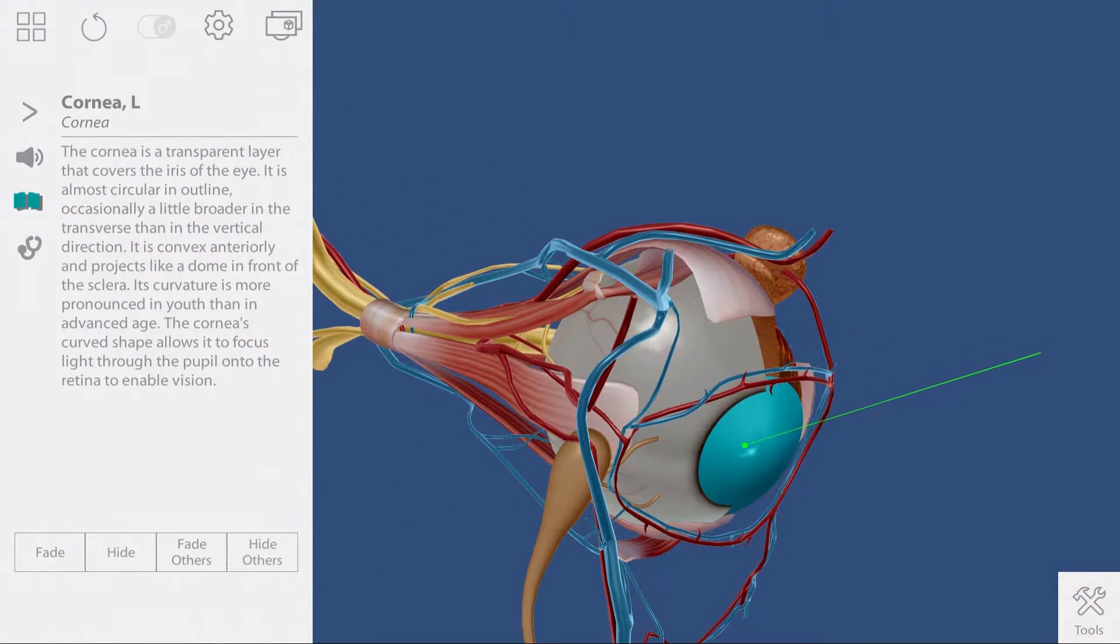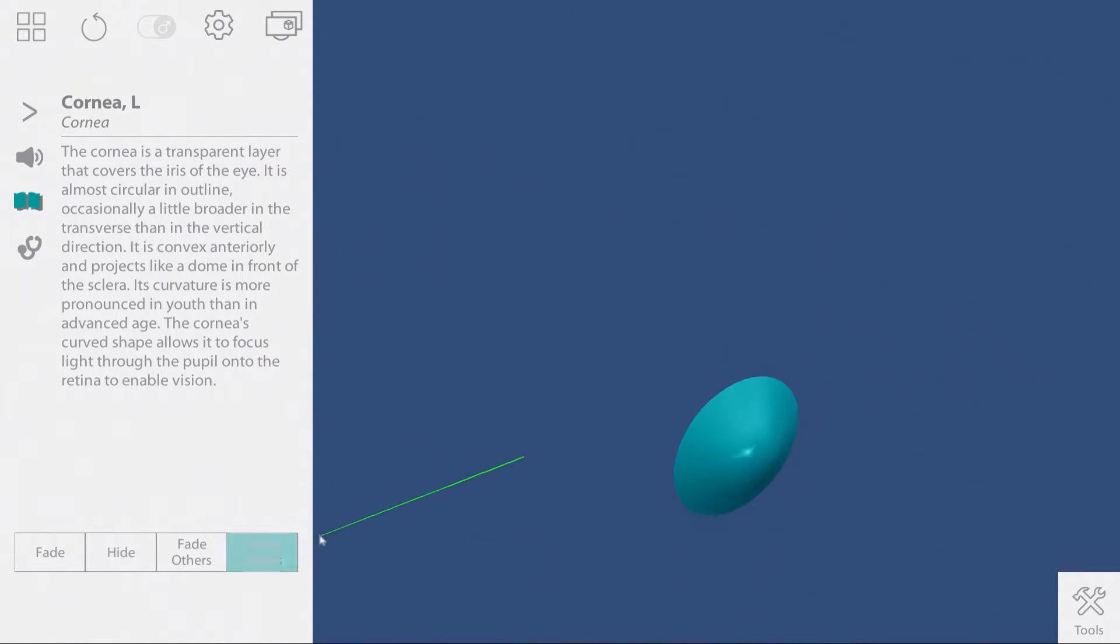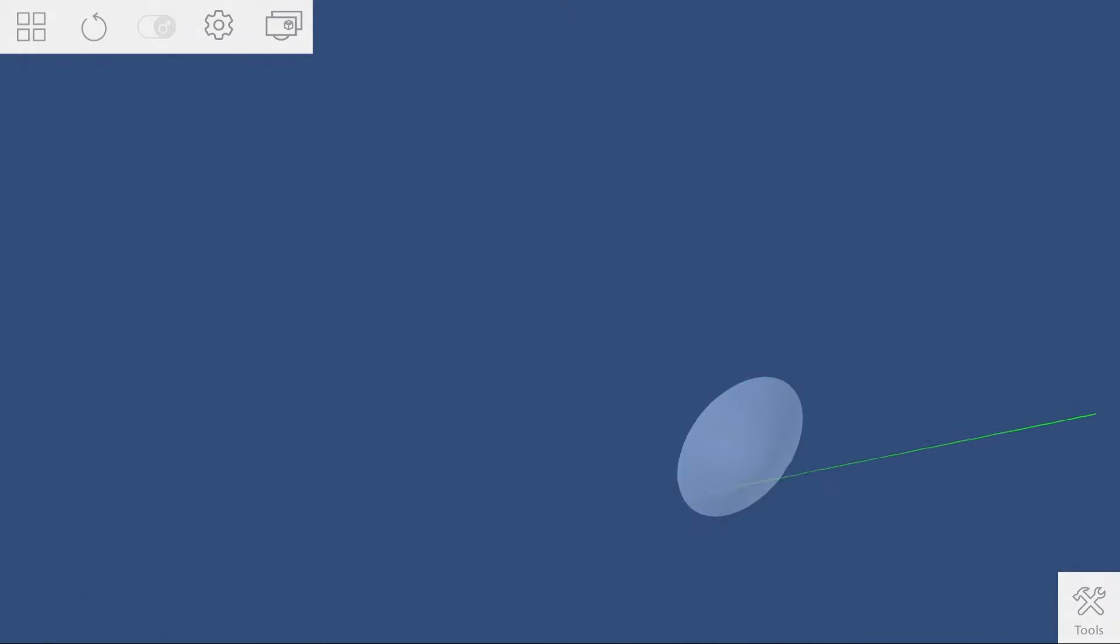Now select the cornea and hide other structures. Rotate around the cornea so students can get an understanding of the curved shape that allows the cornea to focus light through the pupil onto the retina.